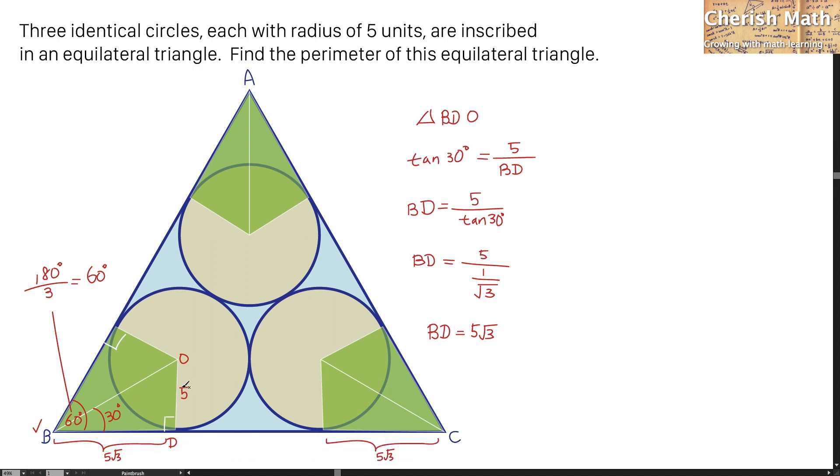And now we need to decide what is the length that connecting from the center of the left circle to the center of the right circle. That is exactly twice of the radius which means this length is at 5 plus 5, 10 units. And it is the same for this part which is at the 10 units.